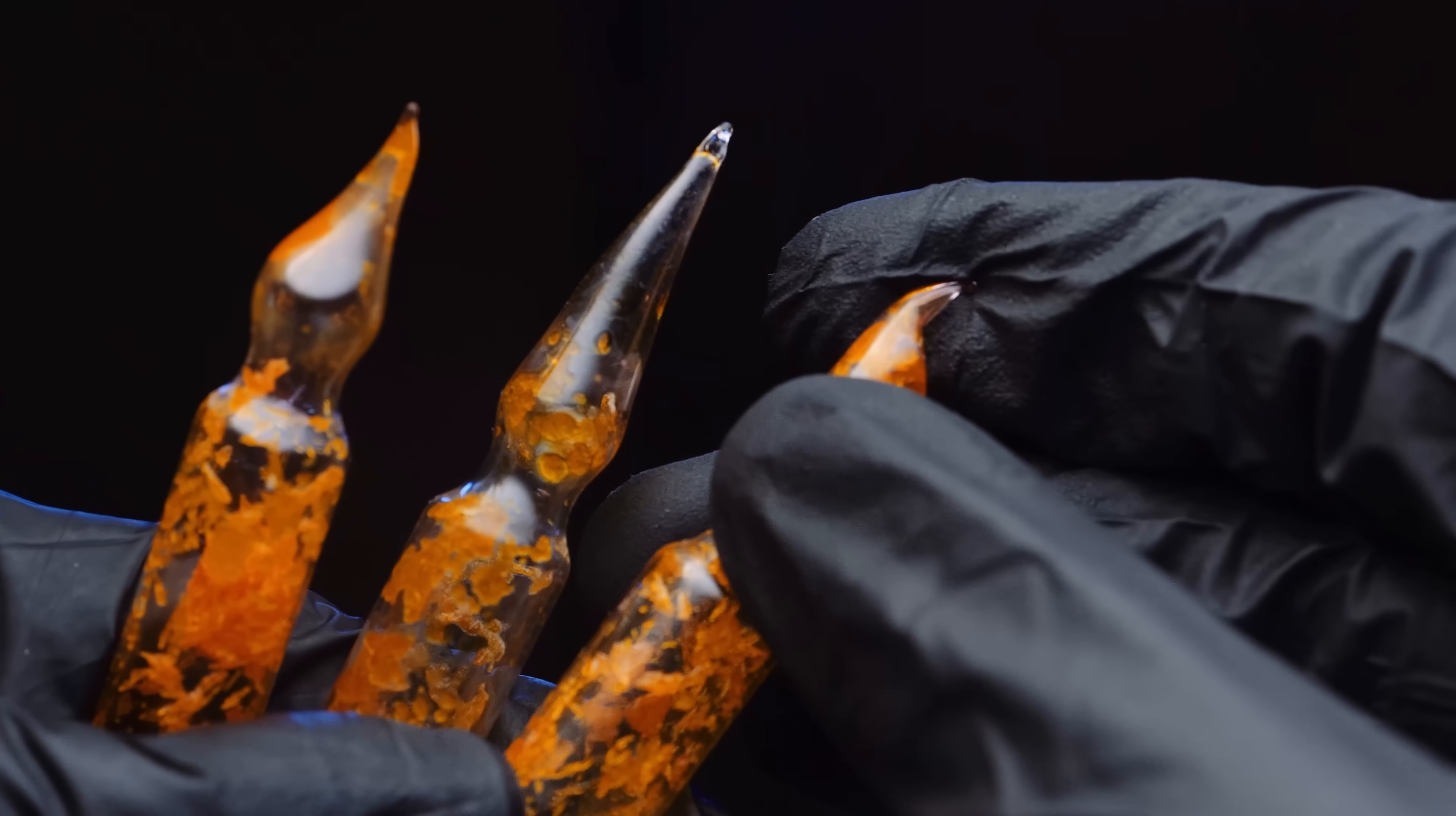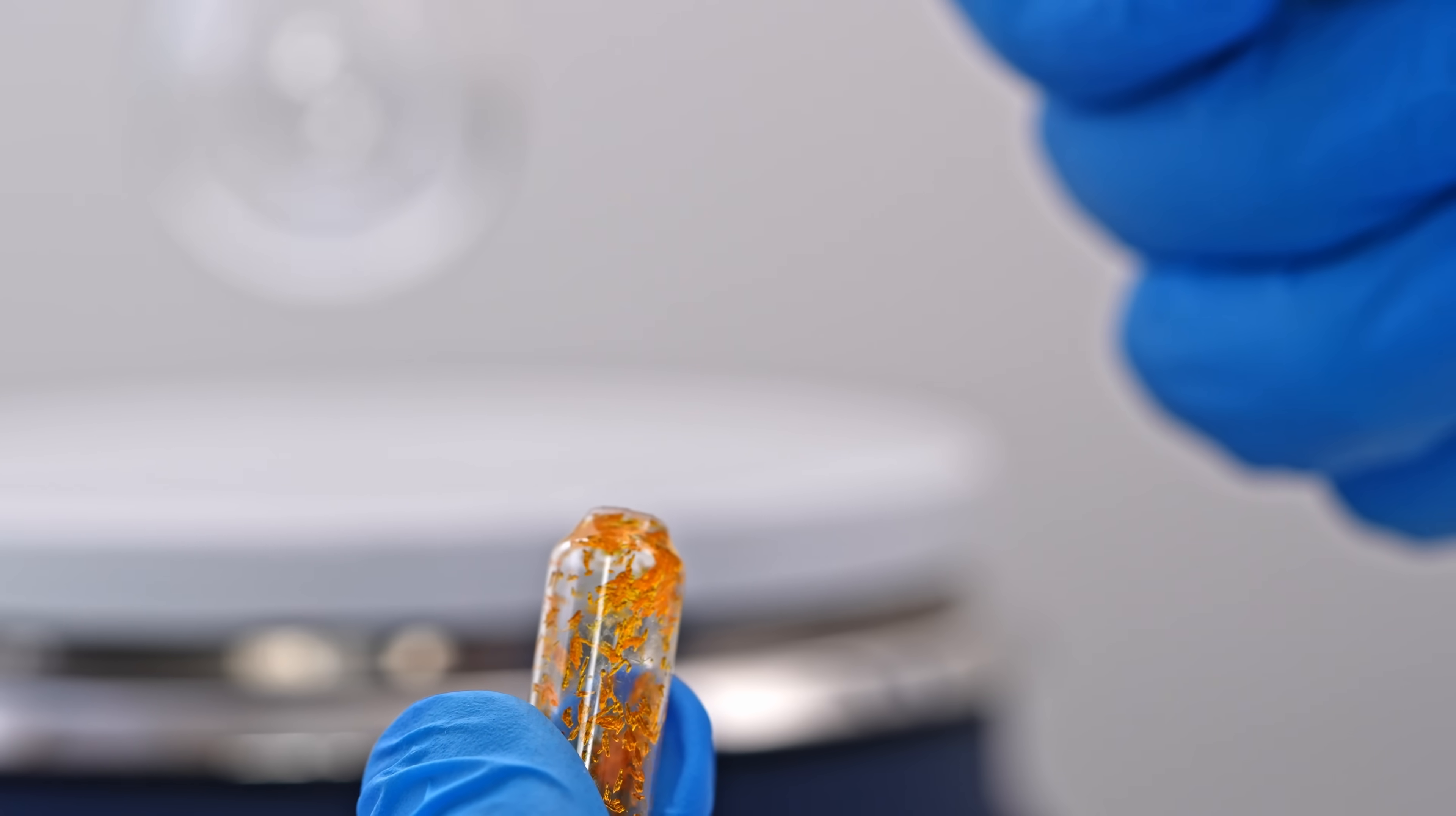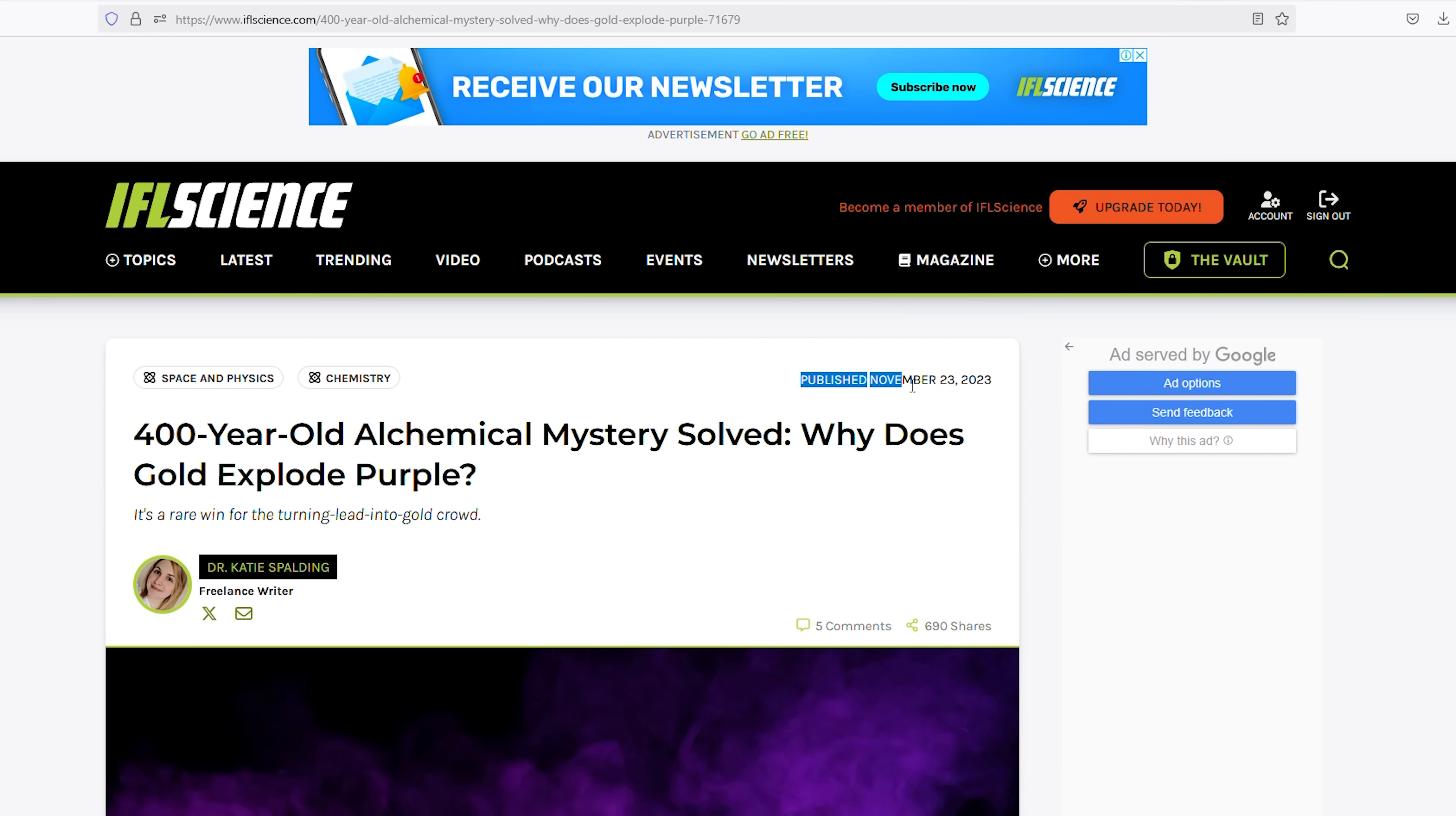Hey guys! These ampoules contain chloro-uric acid. I'll be using these orange crystals to synthesize explosive gold and show you the mysterious purple smoke that was featured in an article on I Love Science last year.